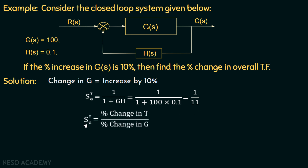Now we know that the sensitivity of the transfer function with respect to gain, S_T^G, is equal to the percentage change in T over the percentage change in G. This is the basic definition of S_T^G, and it is equal to 1/11. We are given the percentage change in G, which is 10%, and we are asked to find the percentage change in T.